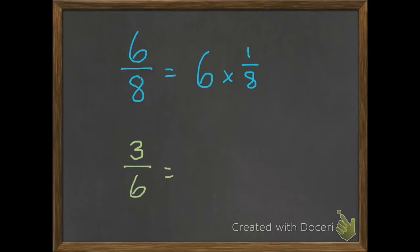Here's another example — I want you to try this one now that you've seen a couple. How can we write 3 sixths as a multiplication equation? If we wanted to, we could write 3 sixths as 1 sixth plus 1 sixth plus 1 sixth, which gives us three 1 sixths, or we can write it as 3 times 1 sixth.